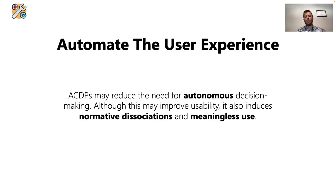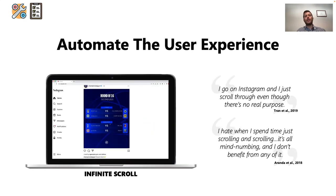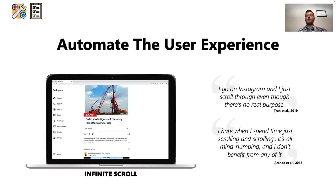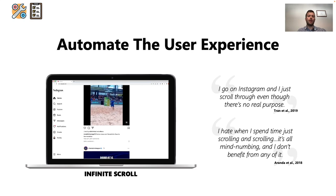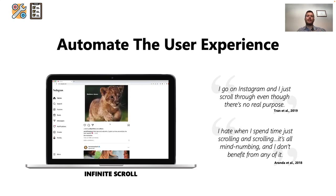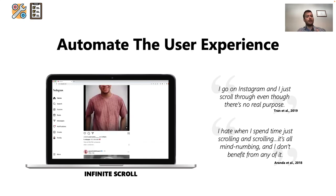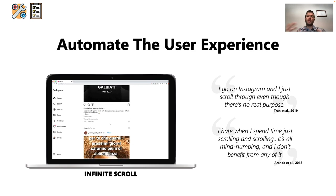Regarding the strategies adopted by attention capture damaging patterns, our review shows that these patterns — especially seductive designs — automate the user experience, reducing the need for autonomous decision making. While this can sometimes improve usability, it may also be a deliberate design decision to induce experiences of normative dissociation, during which we consume content almost unconsciously. For example, the infinite scroll pattern is an effective mechanism for browsing information, but previous studies highlighted that scrolling infinitely is one of the most common factors inducing compulsive social media use with no real purpose.